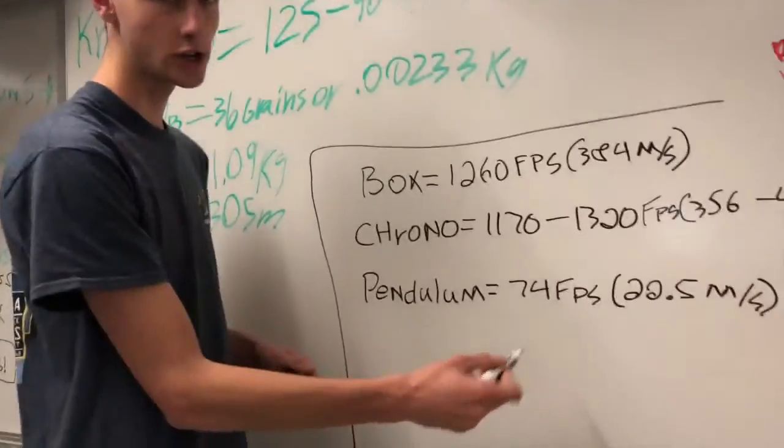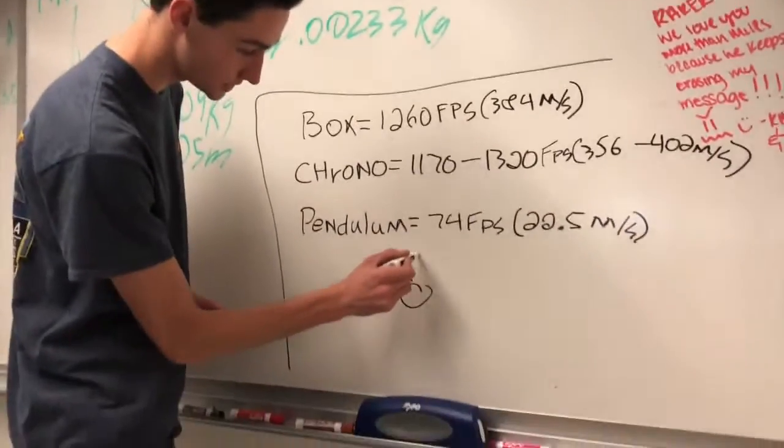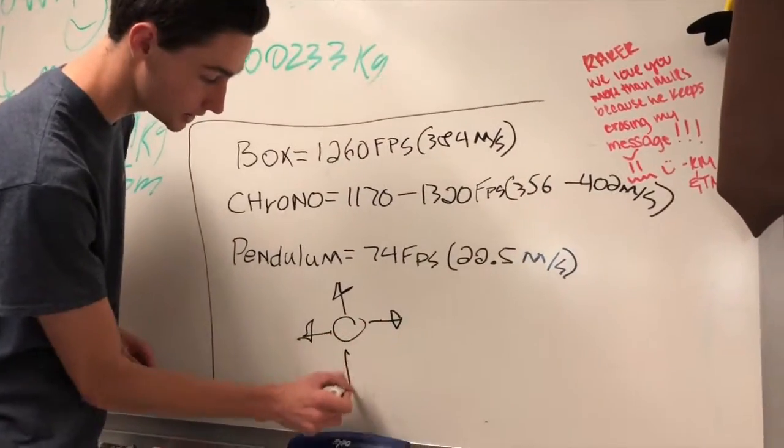So most of this energy is actually lost in the bullet fragmenting because when the bullet hits target, little pieces go in every little direction, and then as well a ton of heat gets put in the target.